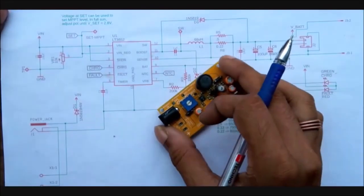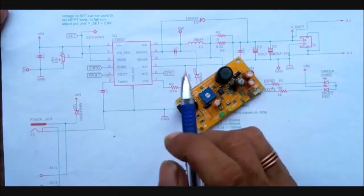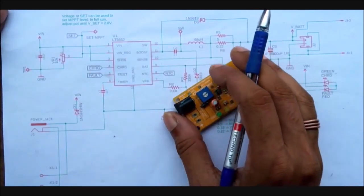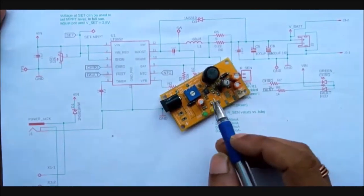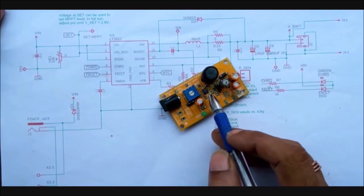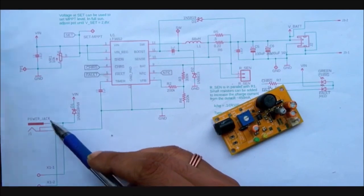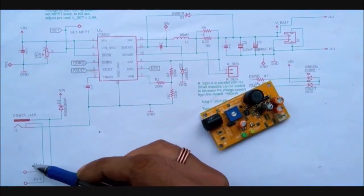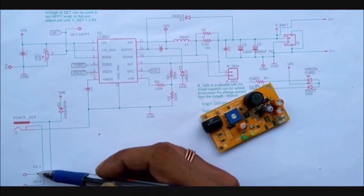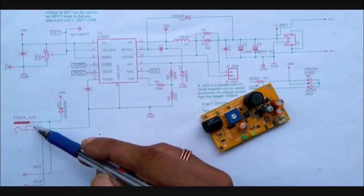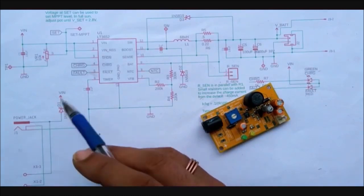Coming back to the circuit diagram the main component is the LT3562 power tracking IC which you can also find on the board over here. The circuit has two input power sources. One is from a DC jack connector and the other is from the solar panel which you can connect here. So this is the DC jack connector to which we can connect an external DC adapter.